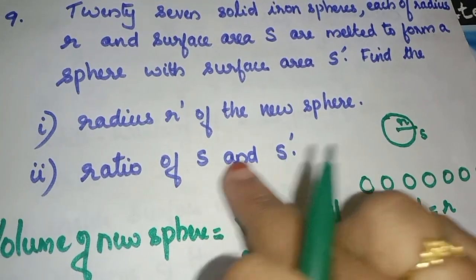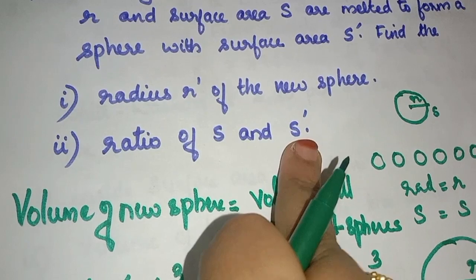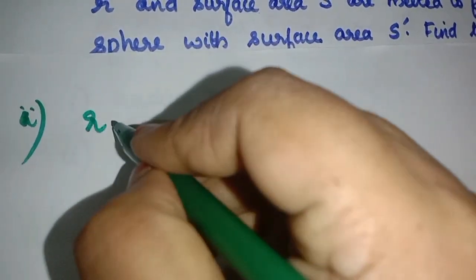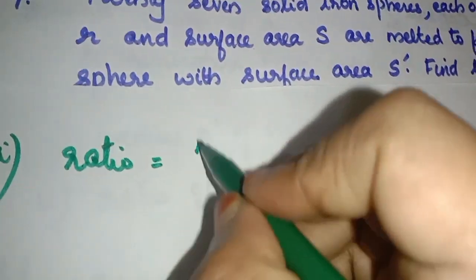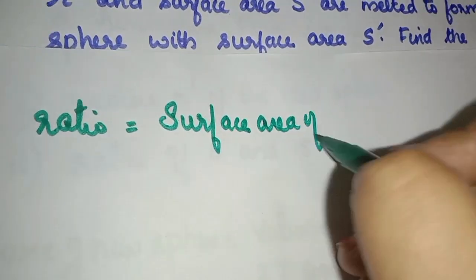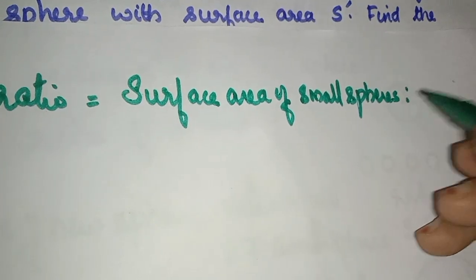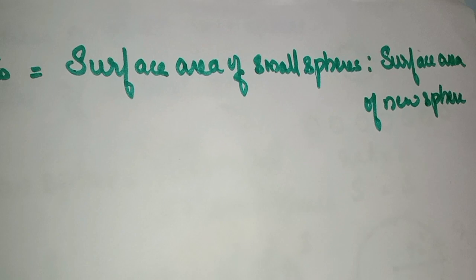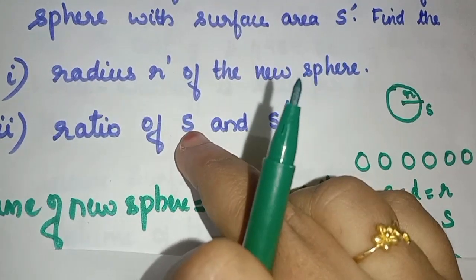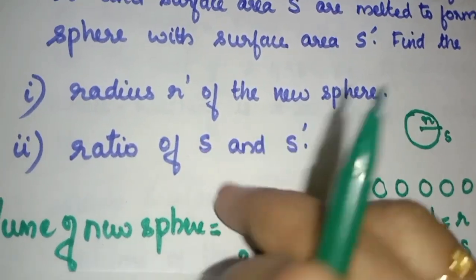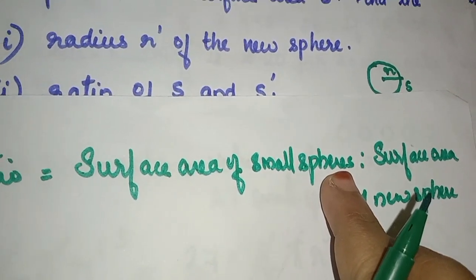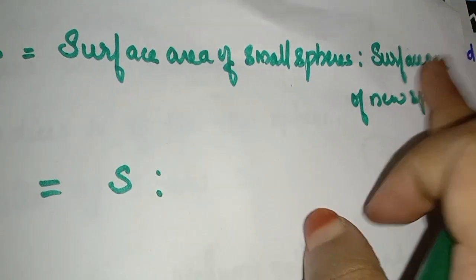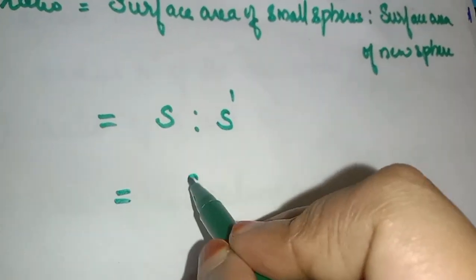Now find the ratio of S and S dash. That is the surface area of the small spheres to the surface area of the new sphere. We will find the ratio S by S dash.